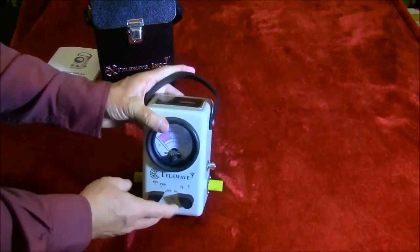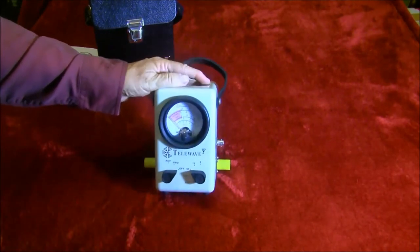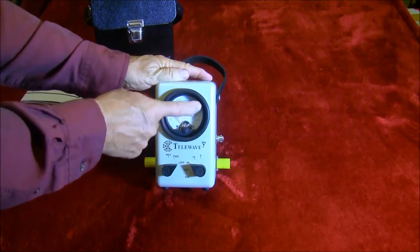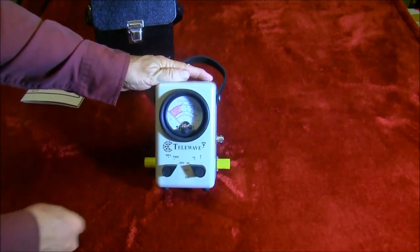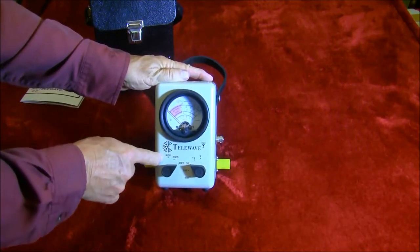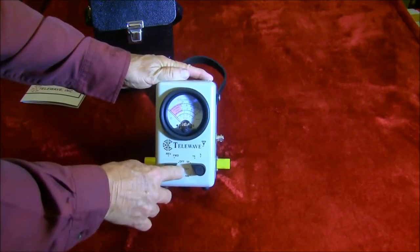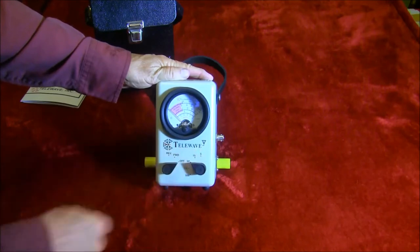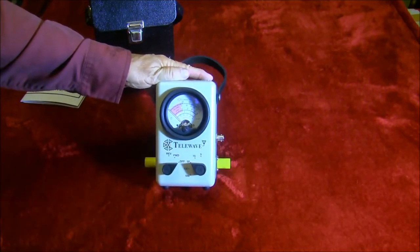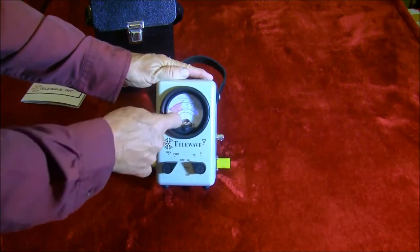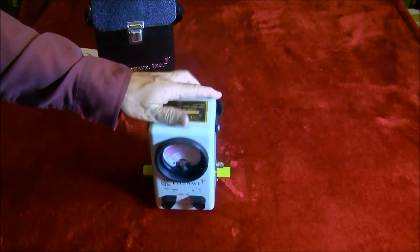This is the meter, and it has various scales which we'll discuss. It has a switch for reverse, forward, and off, and then this switch does 500, 150, 50, 15, and 5 watts full scale. The scales are on here, and we'll go into details on that.